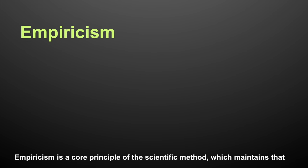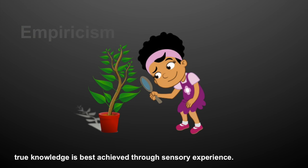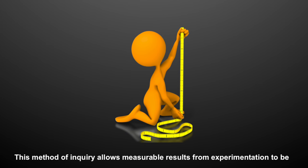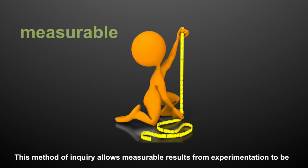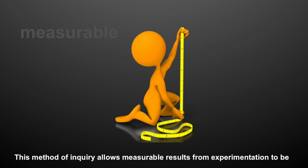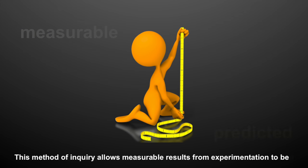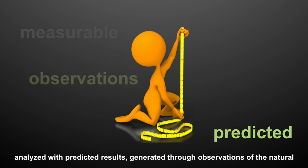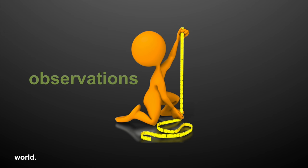Empiricism is a core principle of the scientific method, which maintains that true knowledge is best achieved through sensory experience. This method of inquiry allows measurable results from experimentation to be analyzed with predicted results generated through observations of the natural world.